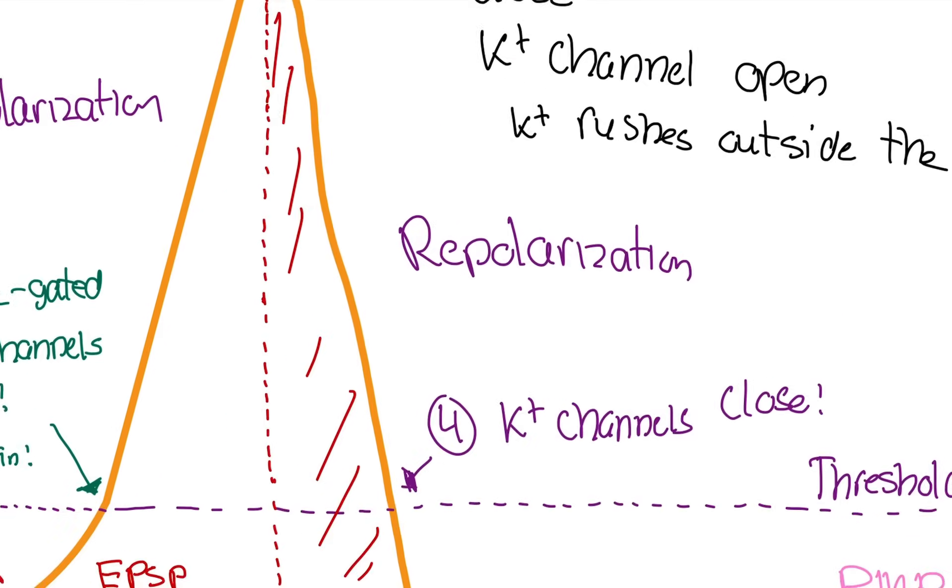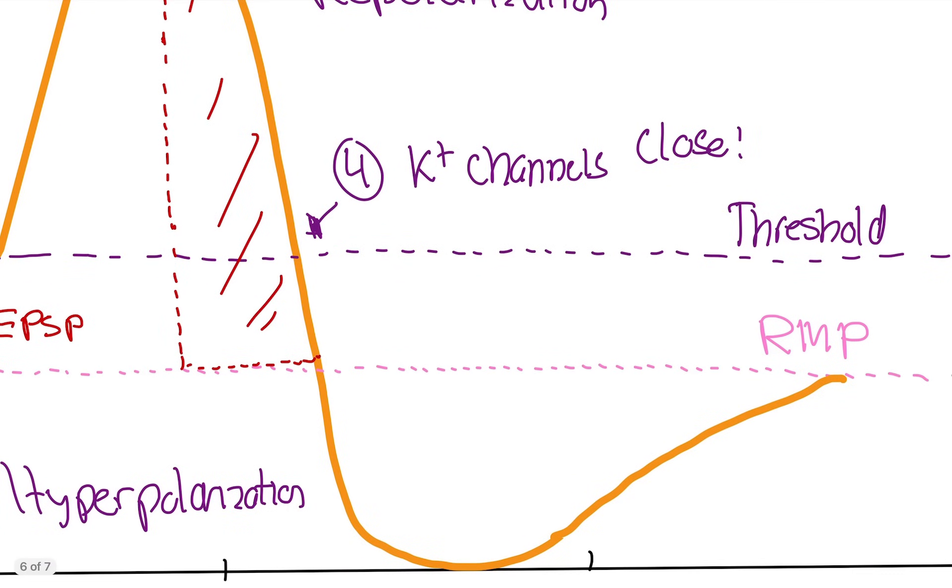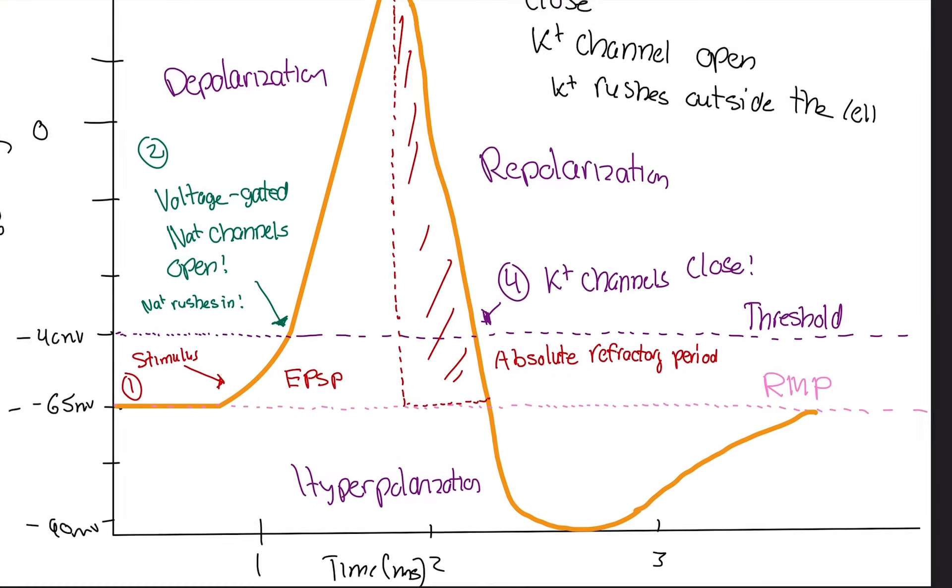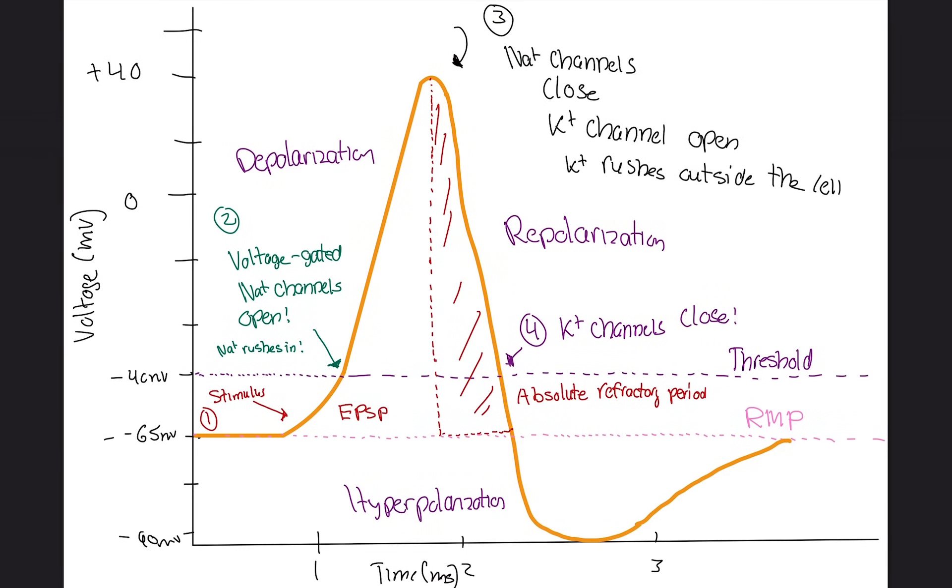Absolute refractory period. What does this mean? So it's that section. The absolute refractory period means no matter how much stimulus you give this neuron, I'm telling you, if you hook this neuron up to an electric chair and zap it with 500 million volts, it will not fire another action potential. There's not going to be any signal. No more signals will be sent. Only during this absolute refractory period.